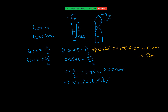So this is the resonance column experiment to find the speed of sound. From the experiment we get L1 and L2. From those, λ = 2(L2 − L1). Knowing the frequency of the tuning fork and the wavelength, we get the speed of sound: V = F × λ. That is the aim of the experiment — finding end correction and finding speed of sound.